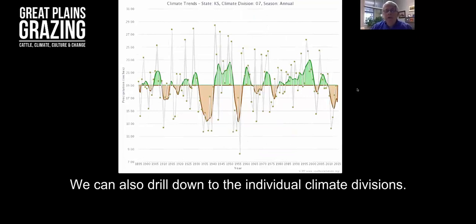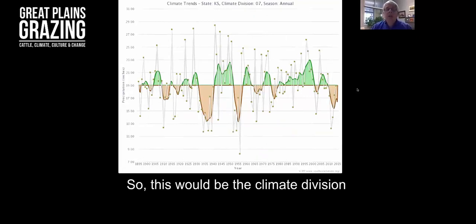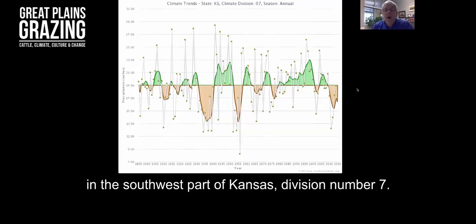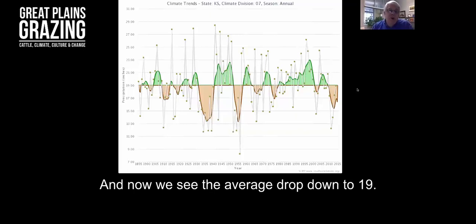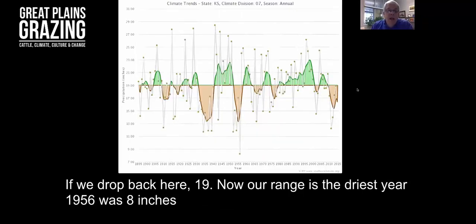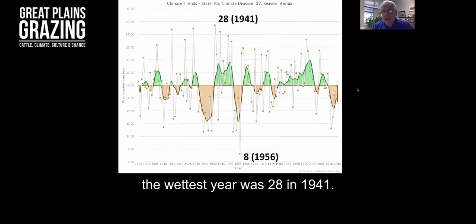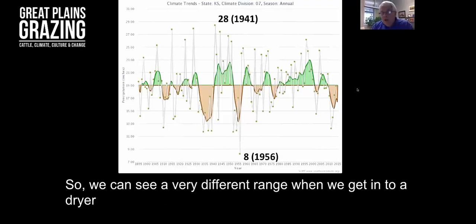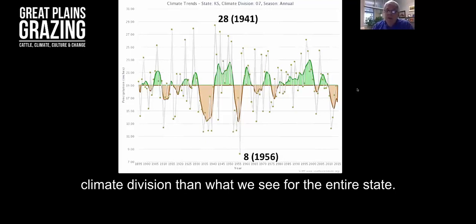We can also drill down to the individual climate divisions. This would be the climate division in the southwest part of Kansas, division number seven. Now we see the average drop down to 19 inches. The average for the state was 27 inches. Our range is the driest year 1956 was 8 inches. The wettest year was 28 inches in 1941. We can see a very different range when we get into a drier climate division than what we see for the entire state.